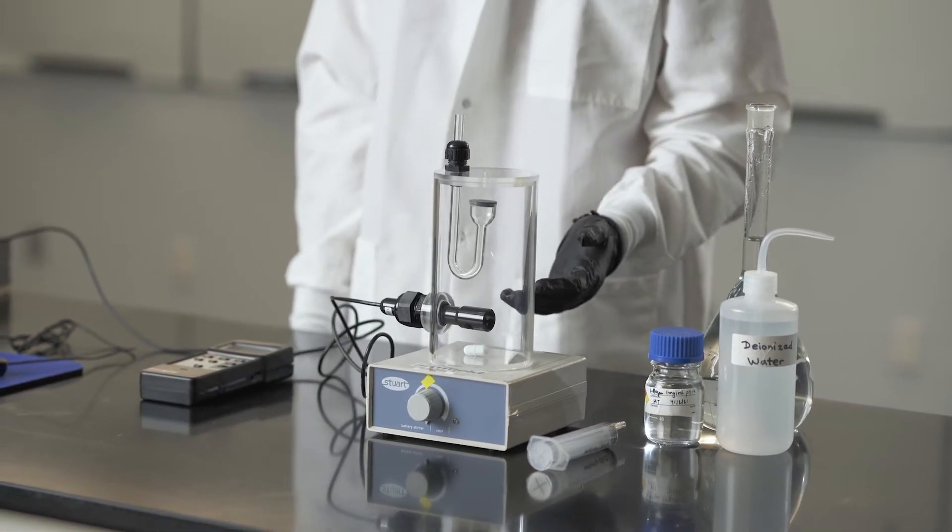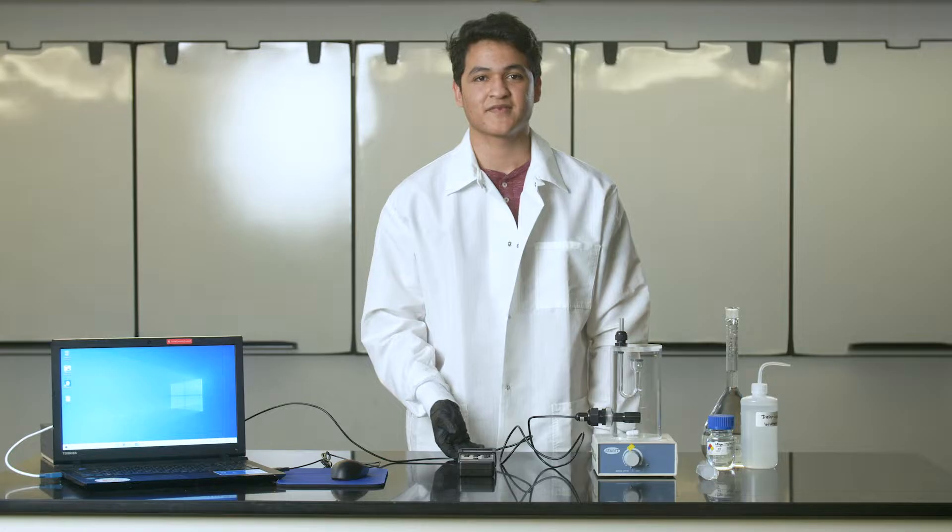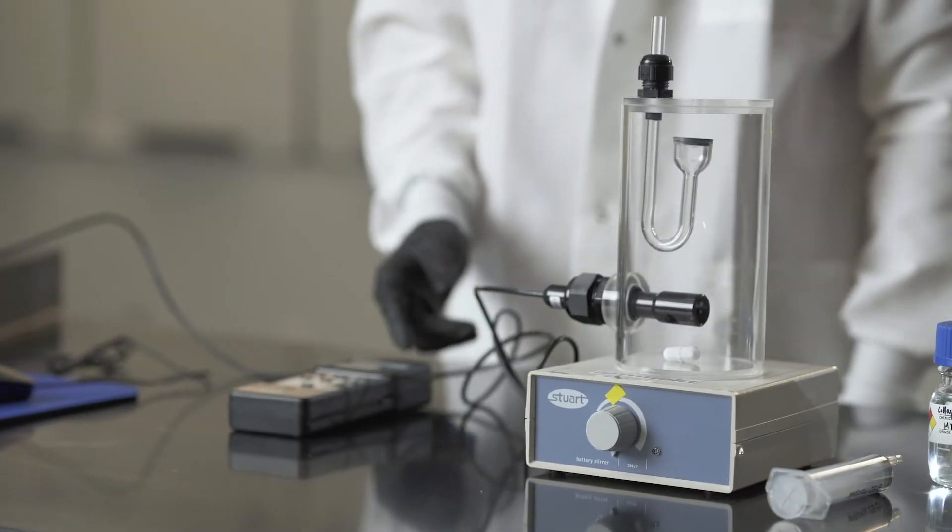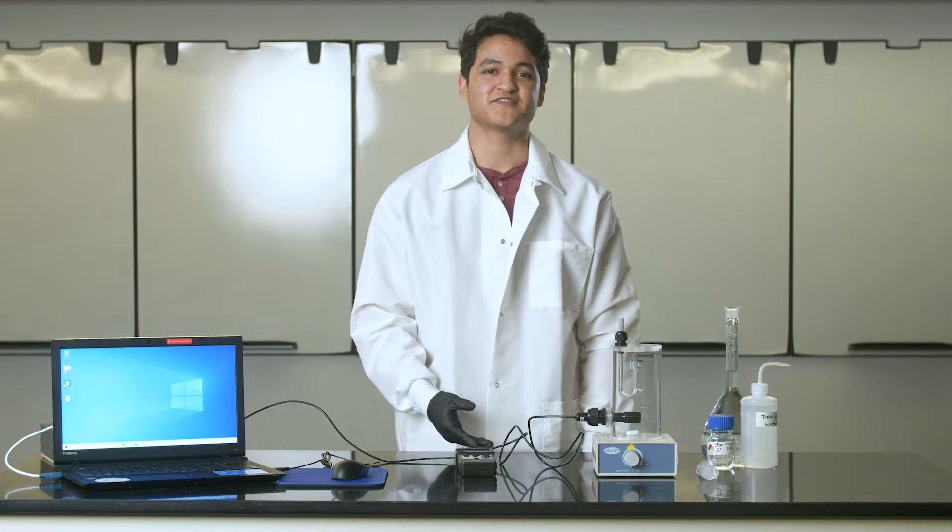The diffusion vessel is a clear acrylic container that is placed on top of the magnetic stirrer. A conductivity meter attached to the diffusion vessel measures changes in conductivity as a function of time.